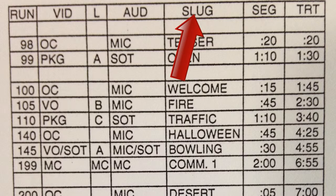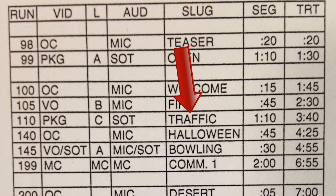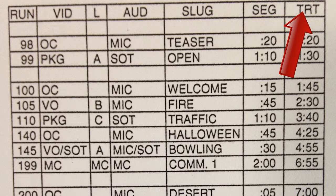The SLUG indicates another identifier for the segment. For a news show, slugs might be section names like welcome, traffic, and weather. The SEG column indicates an estimation of how long the segment will take, including the anchor introduction, video clips, and tags. The TRT column indicates the total running time of the program so far, and it can be expressed as additive or subtractive.